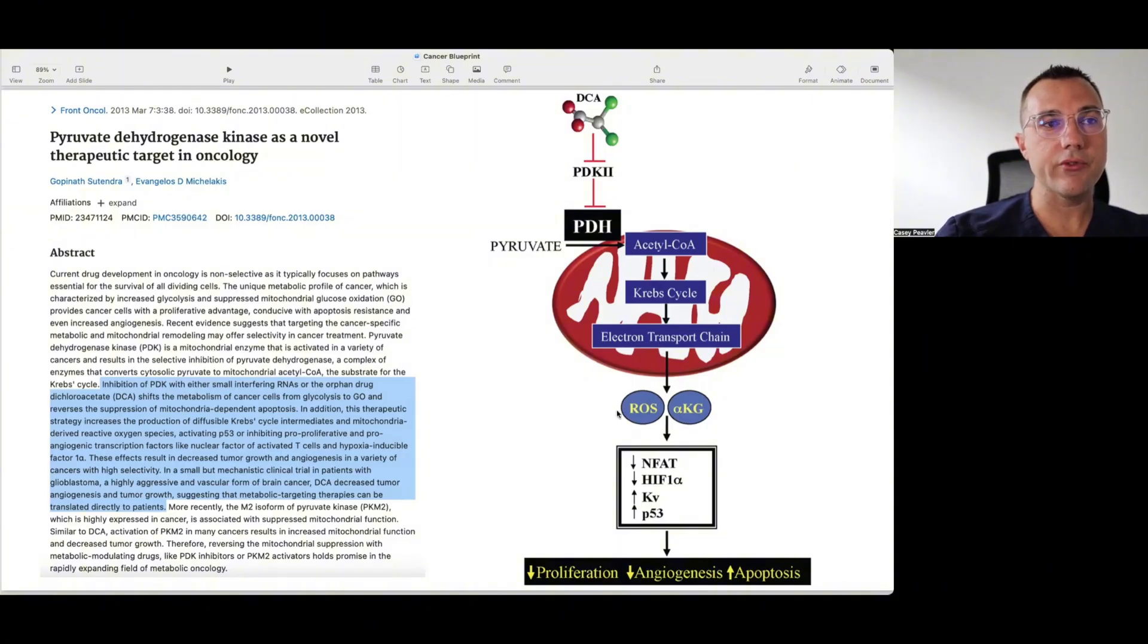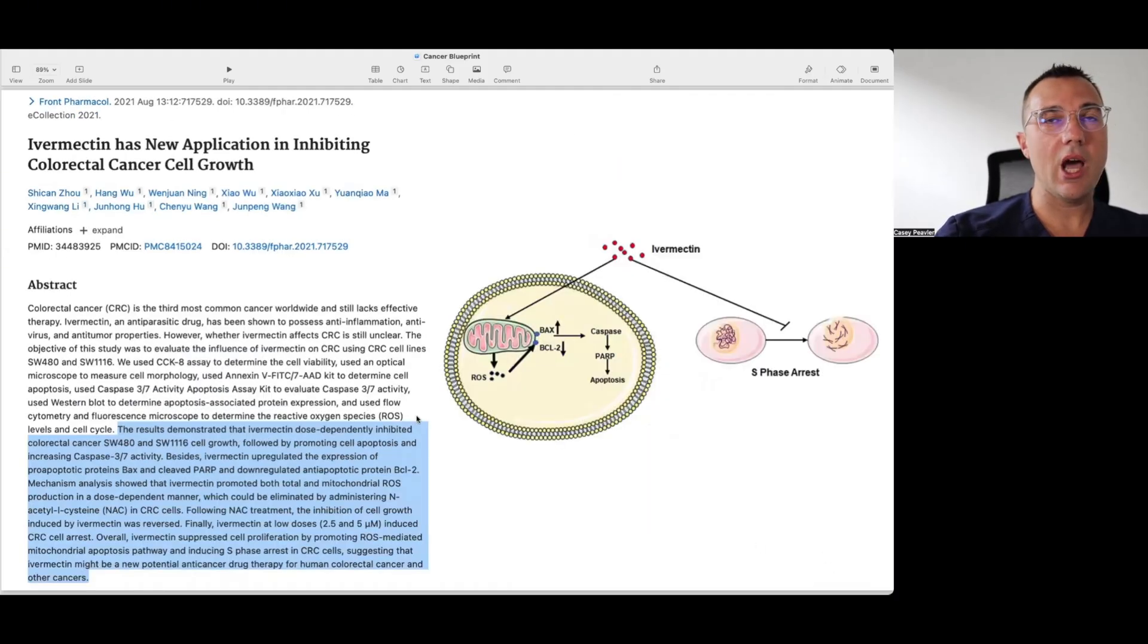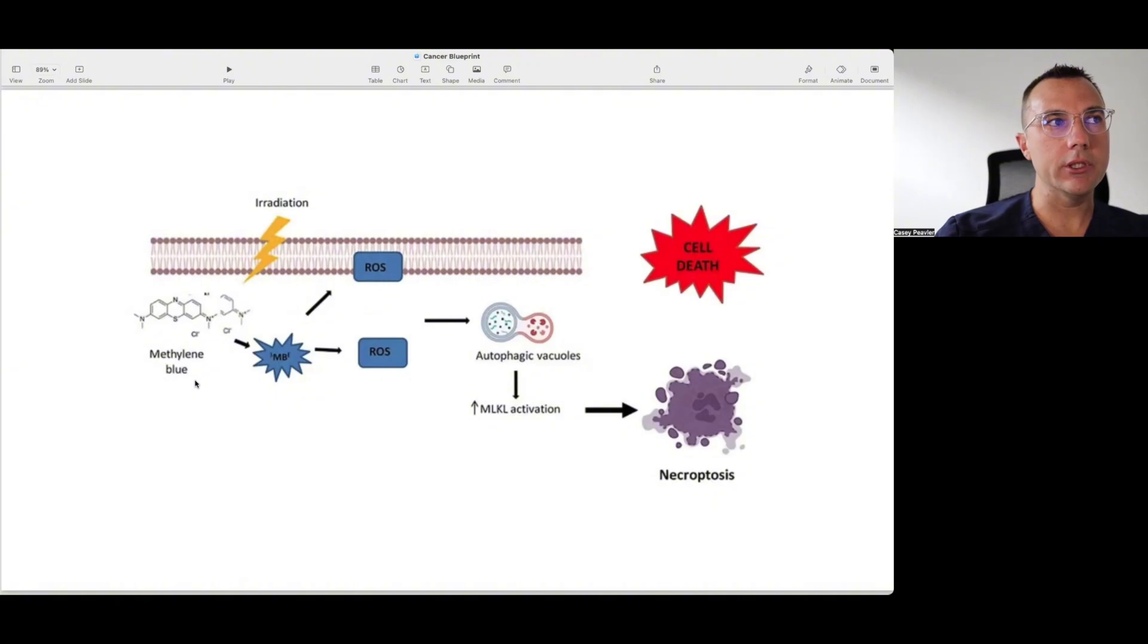Again we've seen this and how ivermectin likely works. Ivermectin at least one of the mechanisms of how it works is that it increases mitochondrial reactive oxygen species and leads to apoptosis through this caspase system. We've talked about it when we looked at methylene blue and it being irradiated by red light and participating in something called photodynamic therapy that is going to also lead to reactive oxygen species and ultimately apoptosis and cell death via a very similar mechanism. We're putting gasoline and oxygen through a broken engine and we have more black smoke in the form of reactive oxygen species and that black smoke ultimately leads to cell death.